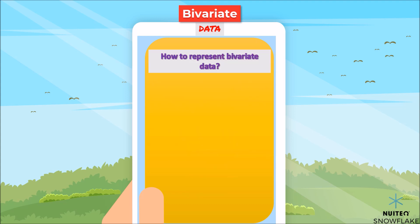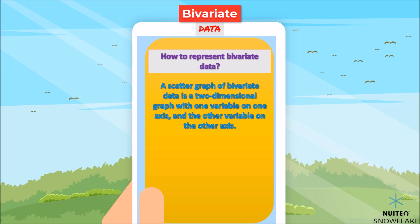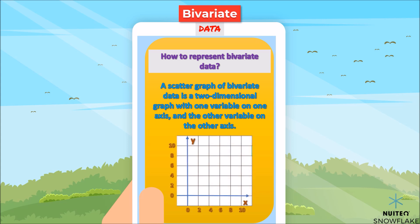So, how do we represent bivariate data? Well, we use scatter graphs. A scatter graph of bivariate data is a two-dimensional graph with one variable on one axis and the other variable on the other axis. We then plot the corresponding points on the graph. We can then draw a regression line, also known as a line of best fit, and look at the correlation of the data — which direction the data goes and how close to the line of best fit the data points are.